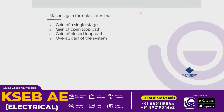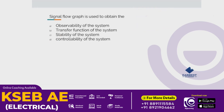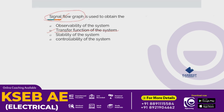Mason's gain formula is given by the sum of pk times delta_k divided by delta. This gives the overall gain of the system — option D. The signal flow graph is used to obtain the transfer function of the system — option B.